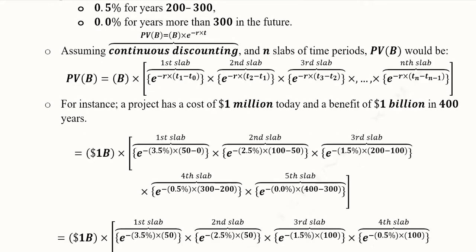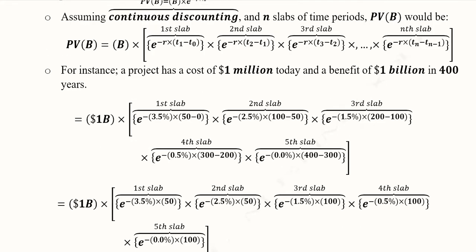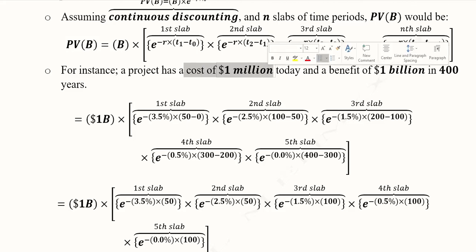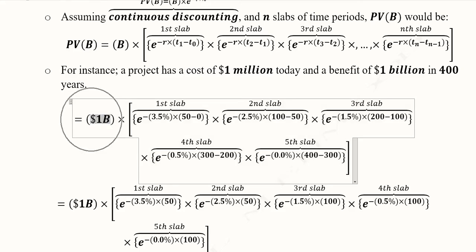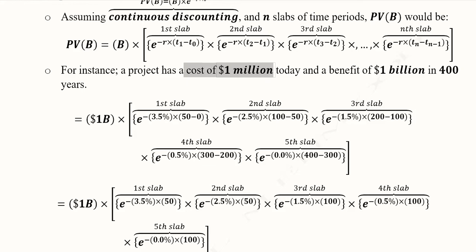We can translate it for the given example in which the cost is $1 million today and the benefits will be $1 billion in the next 400 years. So it means that the benefits, they are $1 billion. We have noted them here. Definitely we have cost, but we will use it later.